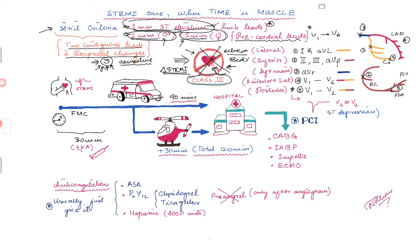Once the patient meets the criteria for ST elevation myocardial infarction, you emergently take the patient to the cath lab to define their coronary anatomy. If there's no culprit, then you can do an echocardiogram or cardiac MRI. But waiting for these tests and delaying patient care is potentially harmful. There will be some gray area — patients who don't meet all strict STEMI criteria — where echo might help guide the decision to go to the cath lab.